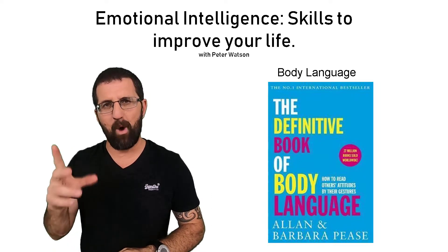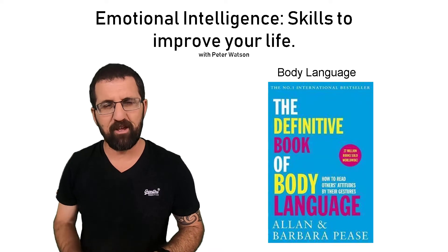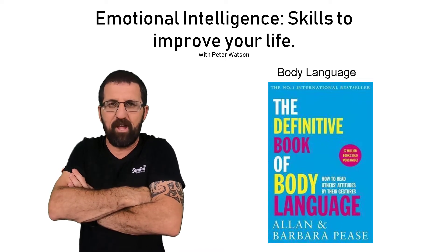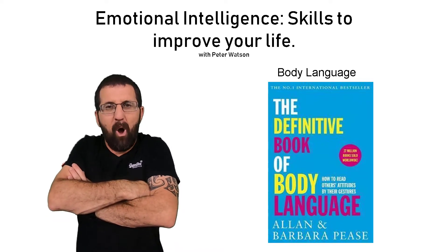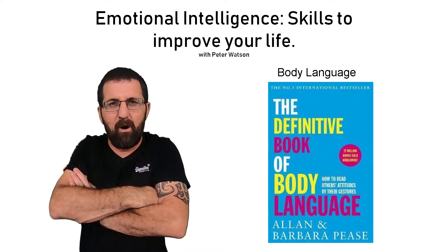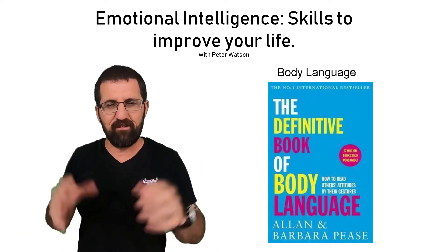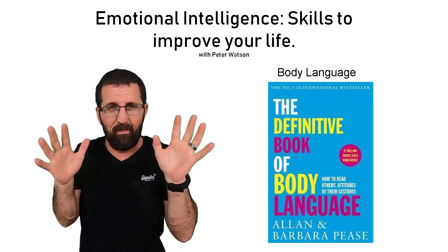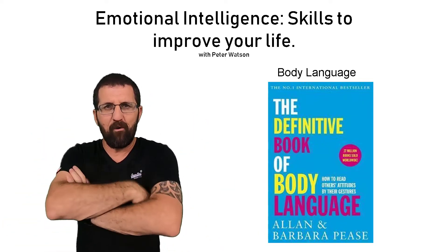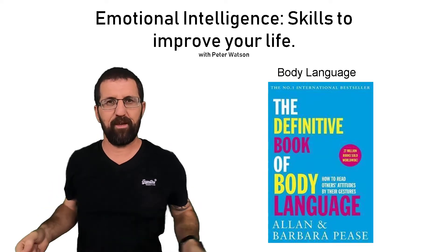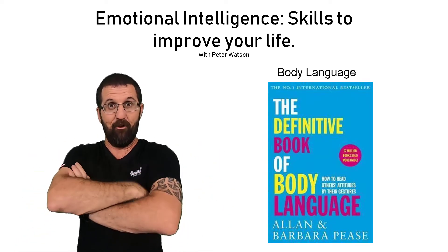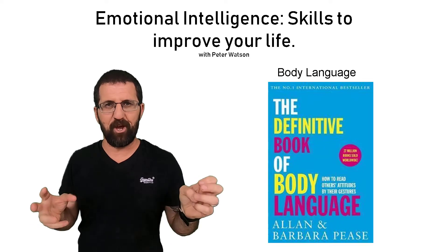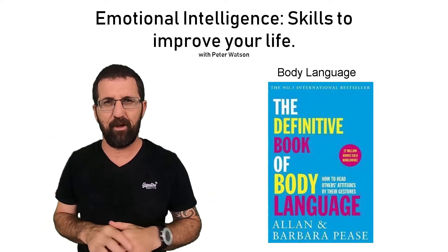Don't just read one thing and say it means something. The classic example is somebody's folded their arms in a meeting — classic interpretation is they're holding something back or hiding something. I had a student in an alcohol and drugs situation, and he was sitting with folded arms. I asked him why, and he said it was simply the most comfortable position for him — he had big muscles. So be very careful not to take one thing and make it mean everything.